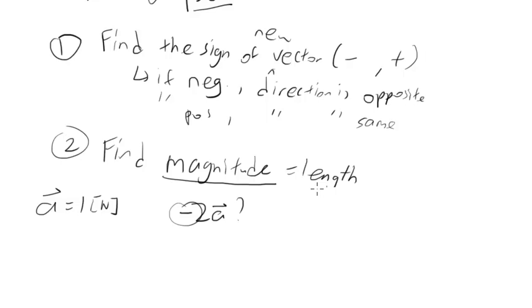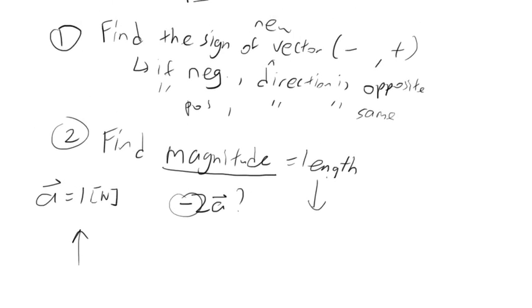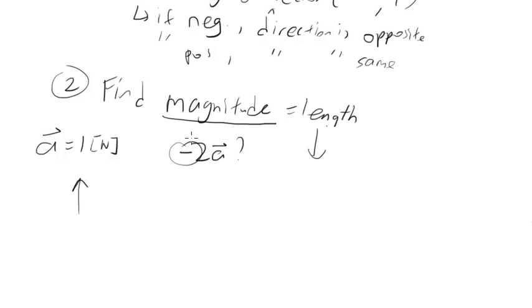So, that's step 1 done. Step 2, find the magnitude of the vector, so the length of 2A. So, again, same thing.